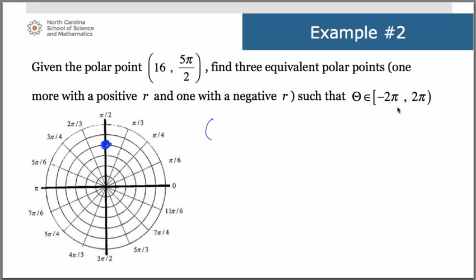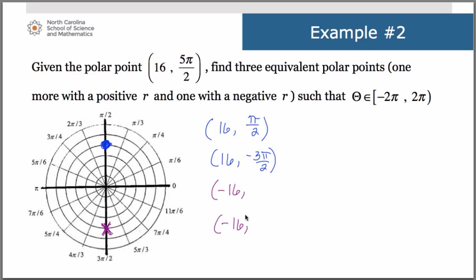We want our angles between negative 2π and positive 2π, but 5π/2 is larger than 2π, so we need to write two points with a positive r value. One of those clearly has an angle of π/2; the negative angle that goes with that is negative 3π/2. Now if we slide the point across the pole, it puts us at the opposite position, giving a negative r. The angles for that point are negative π/2 and, for the positive angle, 3π/2.